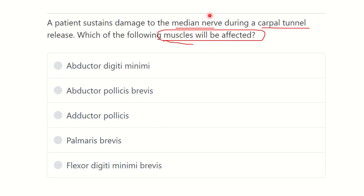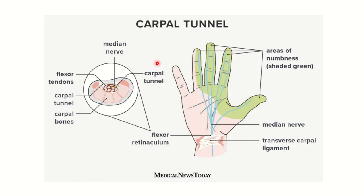We have to find out which muscles are supplied by the median nerve and are located distal to the carpal tunnel. The carpal tunnel contains the median nerve, which passes below the carpal tunnel and supplies sensory or cutaneous innervation to the lateral three and a half fingers.